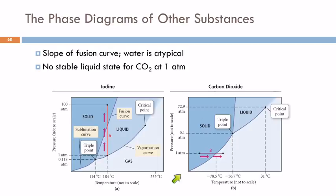For carbon dioxide, what's really interesting is there's no stable liquid state at one atmosphere. You can't get liquid carbon dioxide at one atmosphere. As you increase temperature, it goes directly from solid to gas. We have sublimation, and there's no liquid. You can't get liquid CO2 until you're up to at least 5.1 atmospheres of pressure, and that's a lot of pressure.